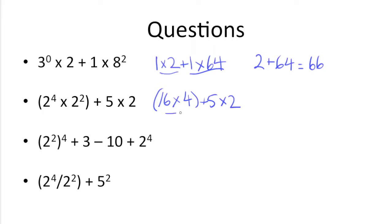Next we do everything in parentheses, so 16 times 4 is 64 plus 5 times 2. Then we have to do multiplication before we can add. So 5 times 2 is 10, and 64 plus 10 gets us 74.